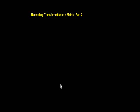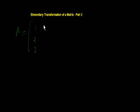Let's take an example of a matrix. This is matrix A: 1, 2, 3 in the first row; 6, 2, 5 in the second row; and 7, 8, 9 in the third row.